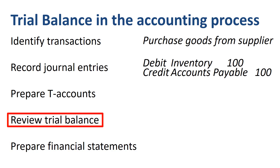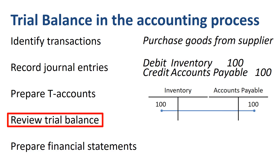The journal entry for purchasing goods from a supplier on credit is: debit inventory, credit accounts payable. Or if you want to visualize that, put the debit amount on the left of the inventory T-account, and put the credit on the right of the accounts payable T-account.